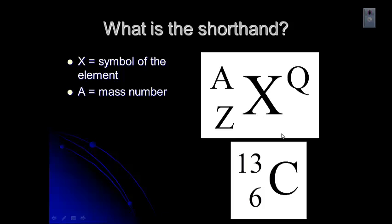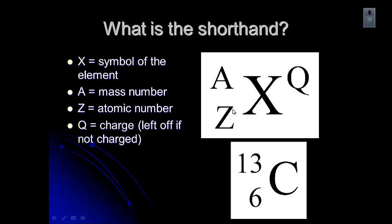With Z as the atomic number, that's the subscript on the left-hand side. And Q then is the charge. So it's left off if there's no charge. In this example, we've got carbon, which has an atomic number of 6 and a mass number of 13 and no charge because there's not a number here. With the charge, there would be a number plus a sign. It has to be positive or negative. You have to give the charge.